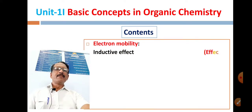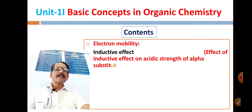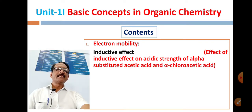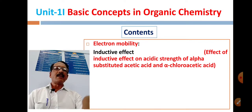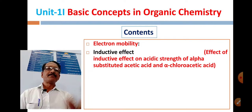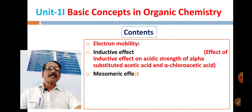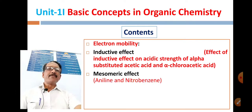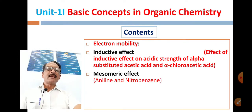In electron mobility, we have the inductive effect. We will look at the effect of inductive effect on acidic strength of alpha-substituted acetic acid and alpha-chloroacetic acid. We also have the mesomeric effect, which involves aniline and nitrobenzene.